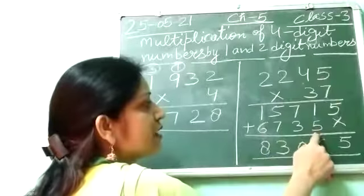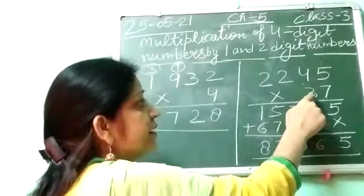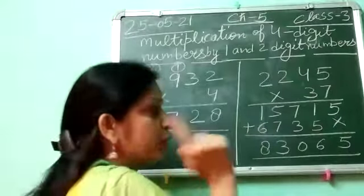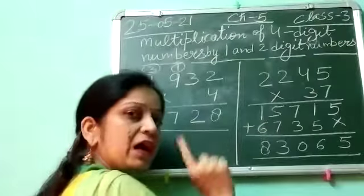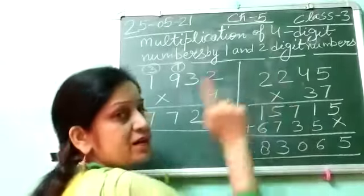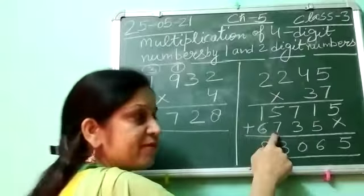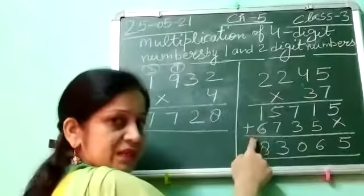Now you will multiply this whole number by 3. 3 times 5 is 15, 1 is carry. 3 times 4 is 12. 12 plus 1 is 13. Again 1 carry. 3 times 2 is 6 plus 1 is 7. Then 3 times 2 is 6. Understood?